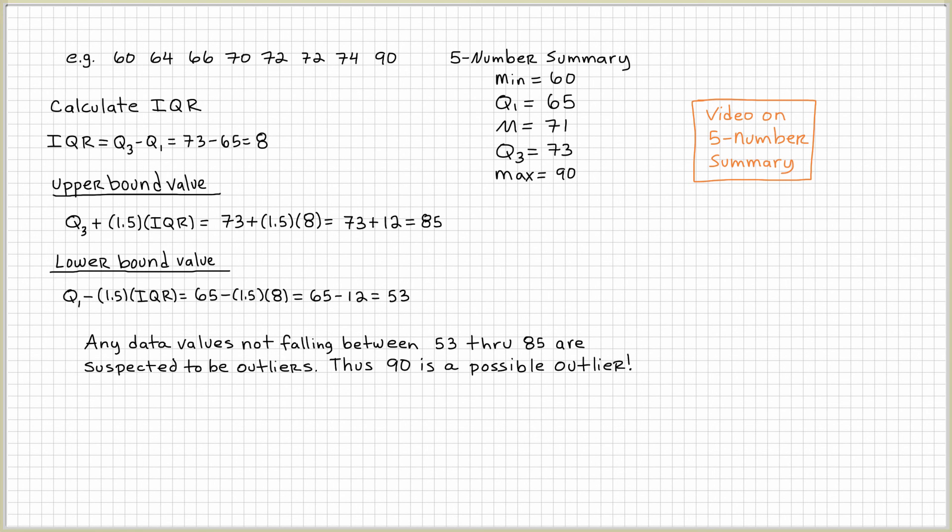So what we do is we can draw a box plot to show that there's an outlier. We want to draw a number line. And then the way I do it, I'll draw a dot for the minimum, a dot for Q1, another dot for the median, another dot for Q3.